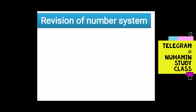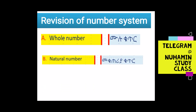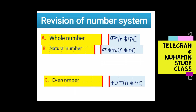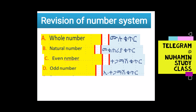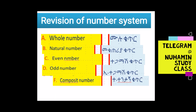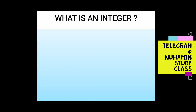Let's look at the revision of the number system. We have the whole number, natural number, even number, composite number, and integer number. What is an integer number?